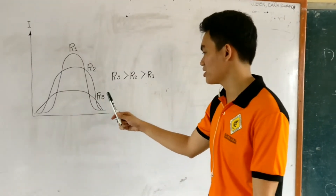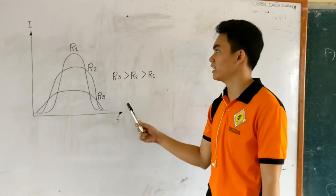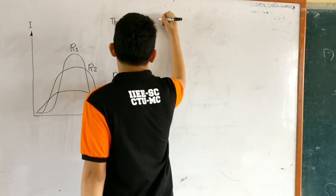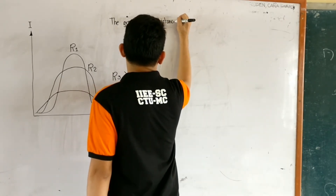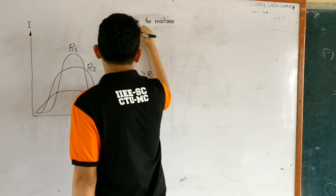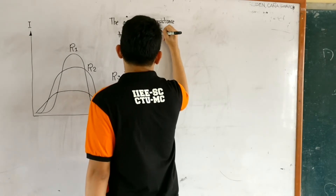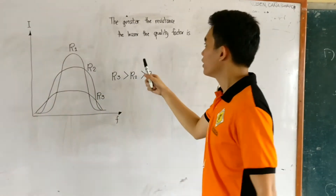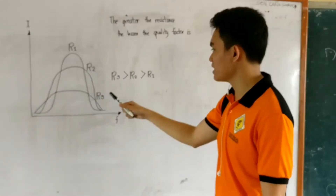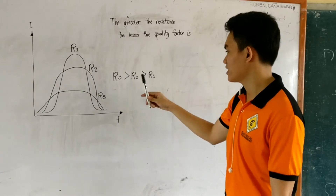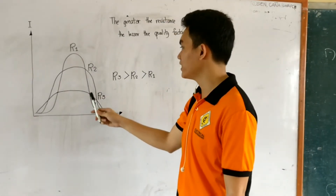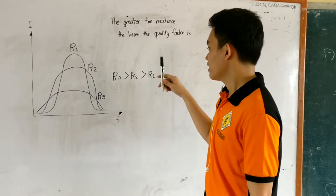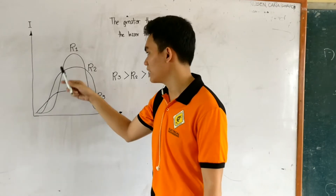As you can see in this graph, the relationship between the quality factor and its resistance in a circuit: the greater the resistance, the lesser the quality factor. Resistance number three is greater than resistance number two, which makes its quality factor lesser than resistance number two, while resistance number one has the least resistance, which makes its quality factor the biggest of the three.